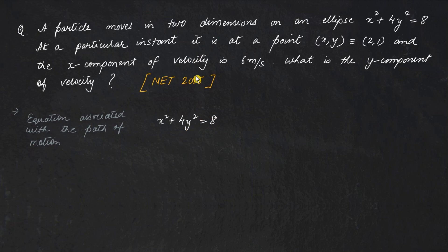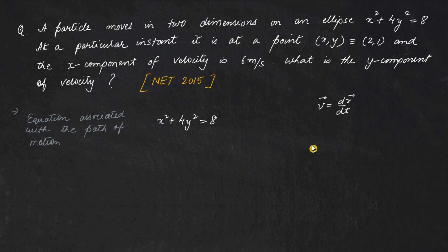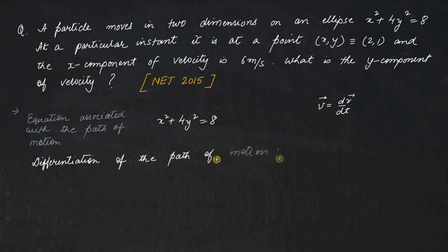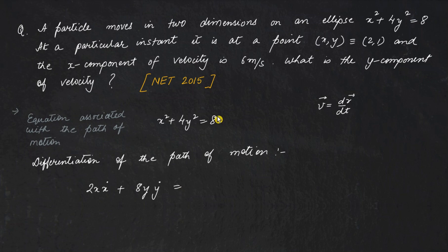If you are given the equation associated with the path of motion and required to find velocities or accelerations, it is quite easy if you understand that velocity is the time derivative of the position vector components. So to obtain the velocity components, simply take the time derivative of both sides of the equation. The time derivative of x² is 2x·ẋ, and the time derivative of 4y² is 8y·ẏ, while the derivative of 8 is zero.